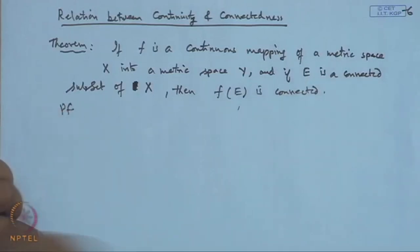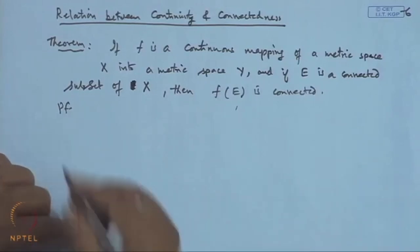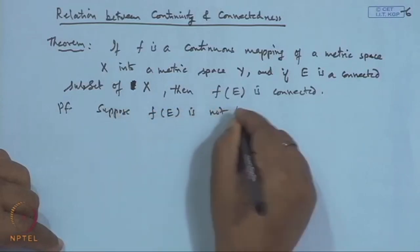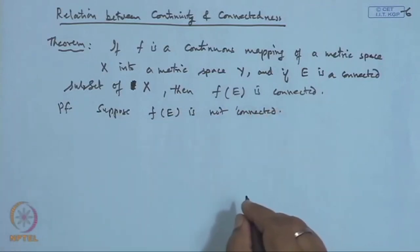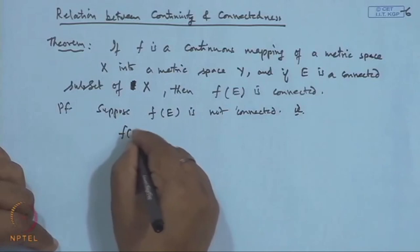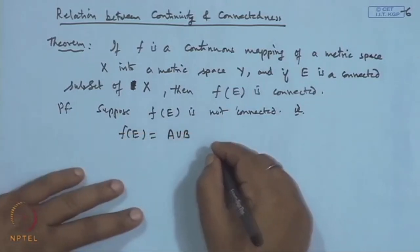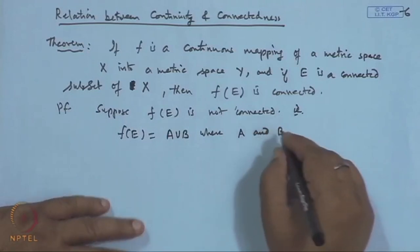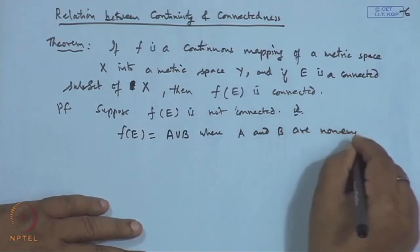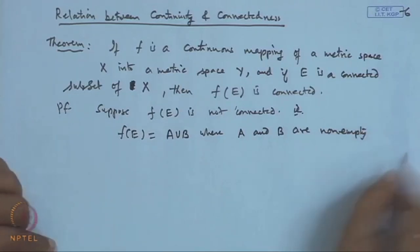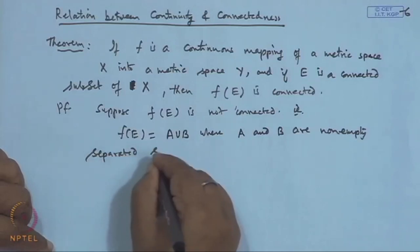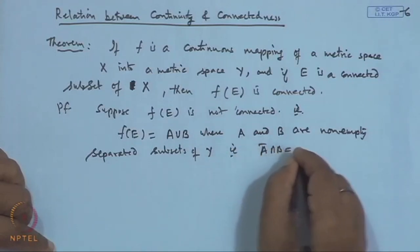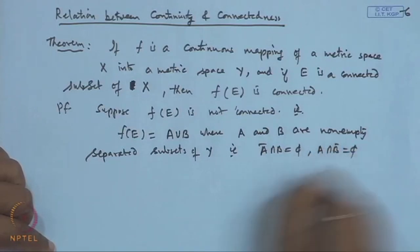Assume the contrary: suppose f(E) is not connected. Then we will reach a contradiction. If it is not connected, f(E) can be expressed as the union of two sets A and B, where A and B are non-empty separated subsets of Y — that is, Ā ∩ B is empty and A ∩ B̄ is empty.